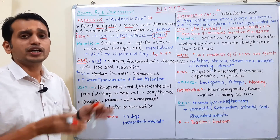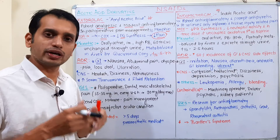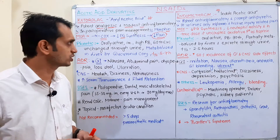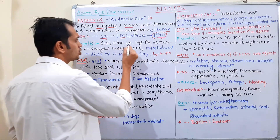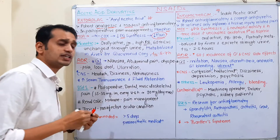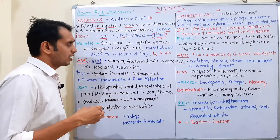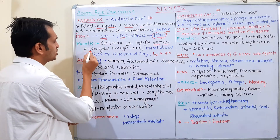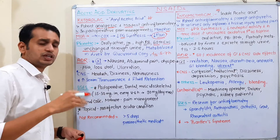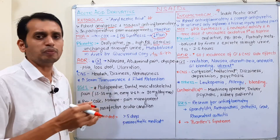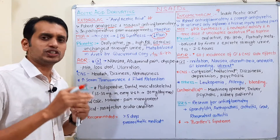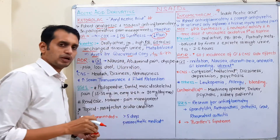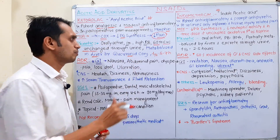Regarding the pharmacokinetic profile of ketorolac: it can be given orally or by IM or other parenteral routes. It is well absorbed orally through the GI tract. It has highly protein binding. Approximately 60% of the drug is excreted through the urine in unchanged form, while the remaining portion is metabolized in the liver by glucuronide conjugation. The plasma half-life is approximately 5 to 7 hours.